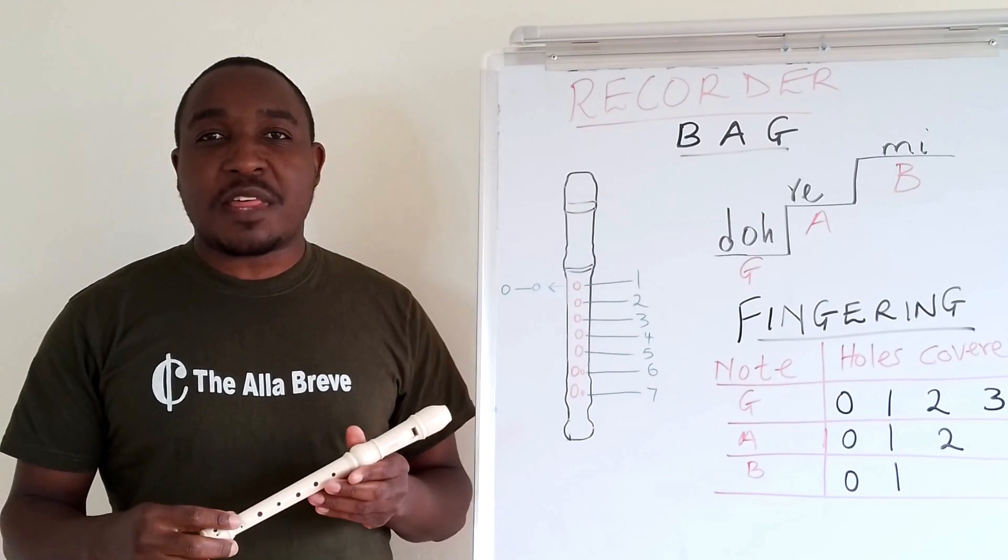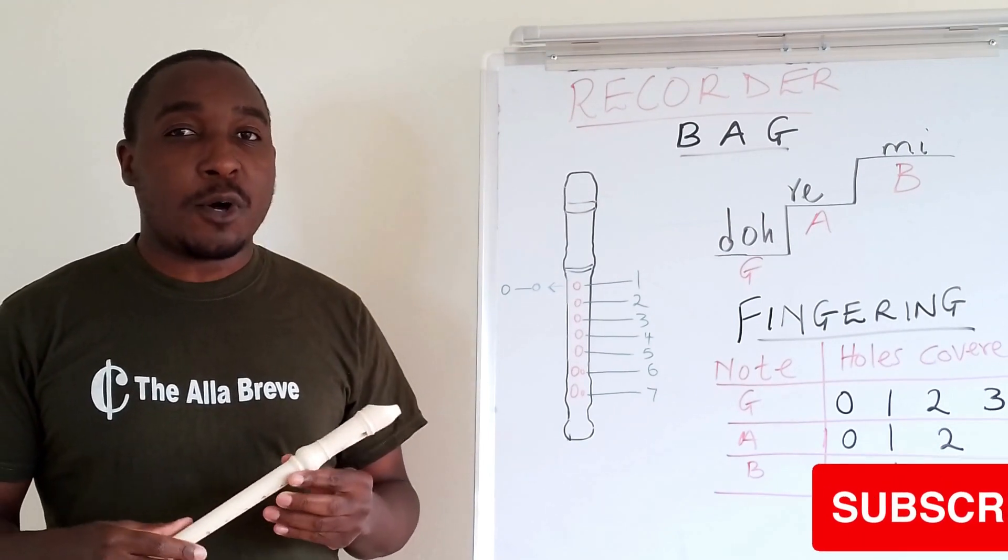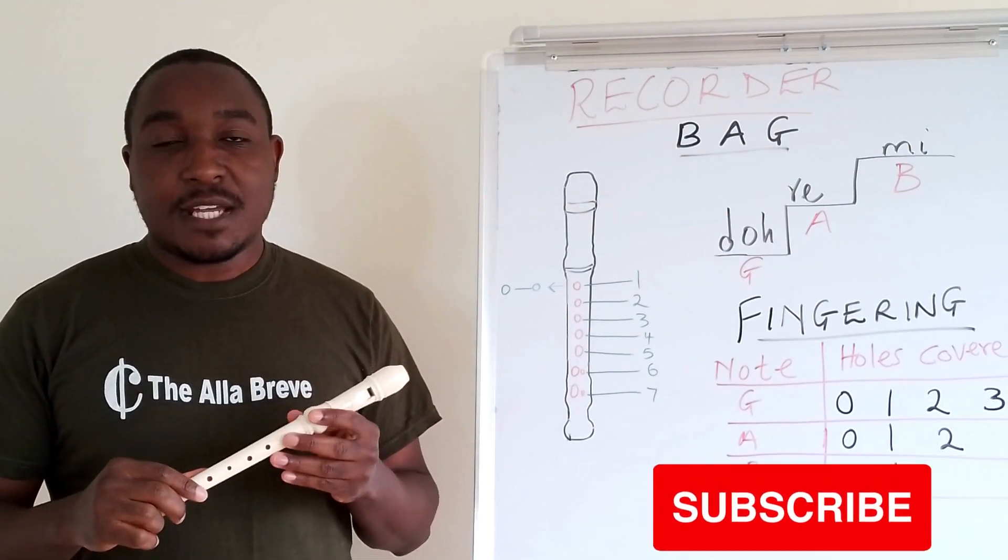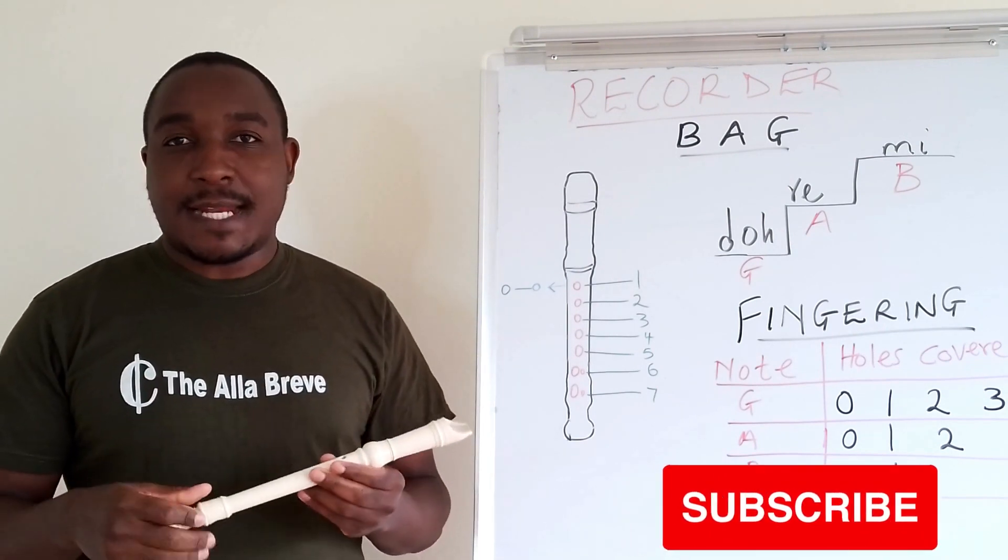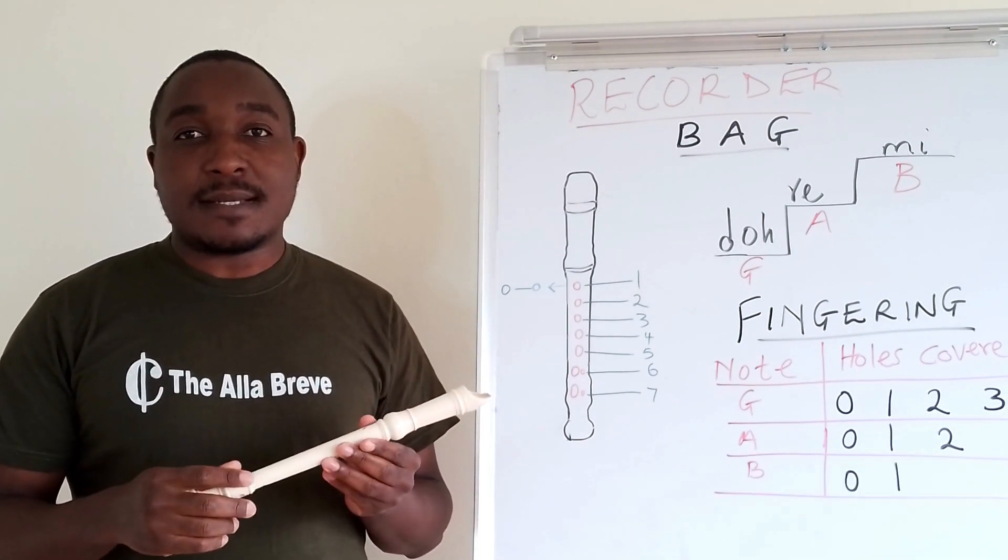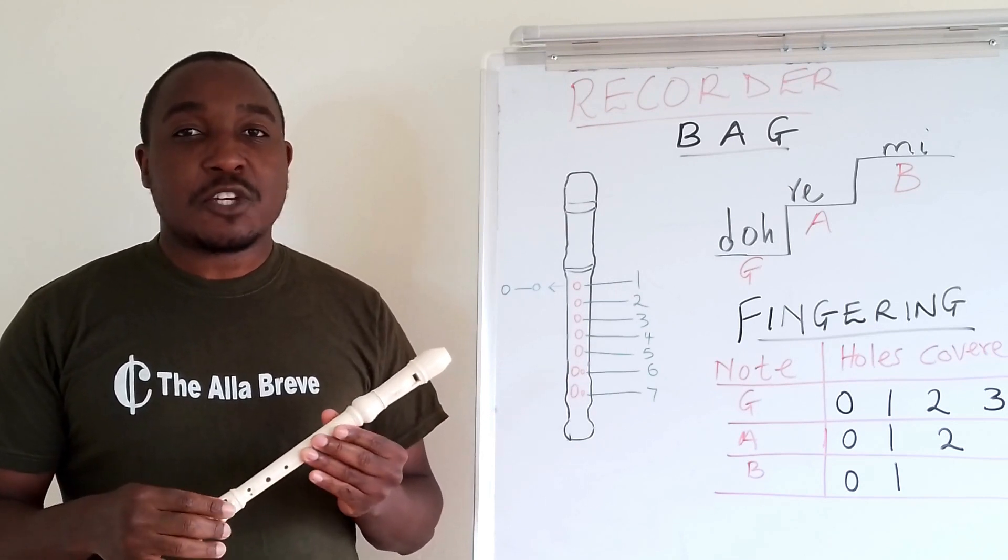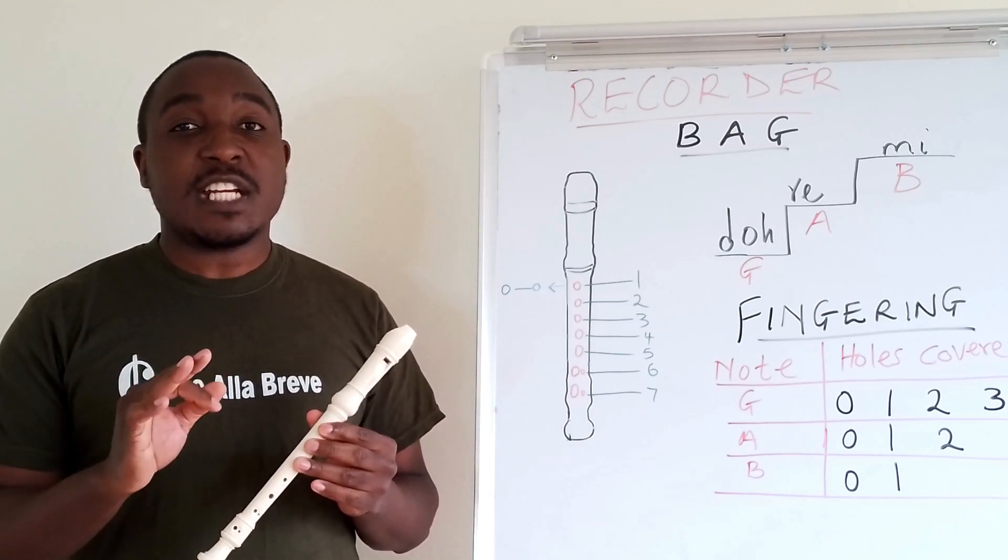Hello and welcome to the third lesson of grade 4 CBC Music Theory. Today we focus on the Descant Recorder. In grade 4, it is anticipated that the learners should be taken through three notes.